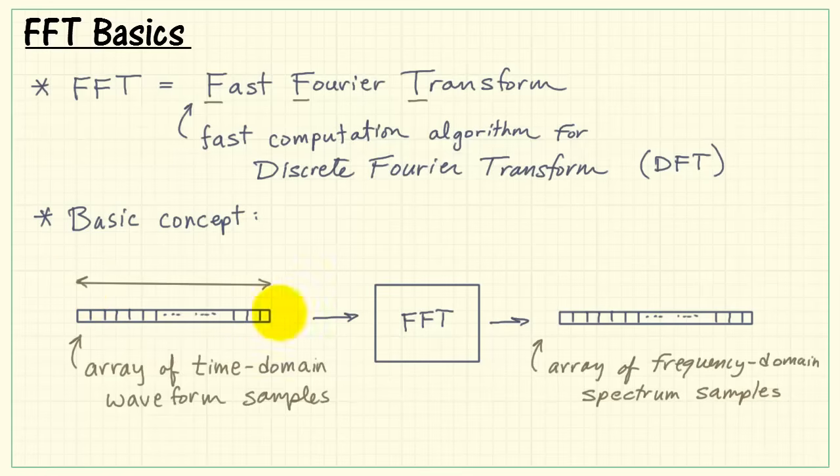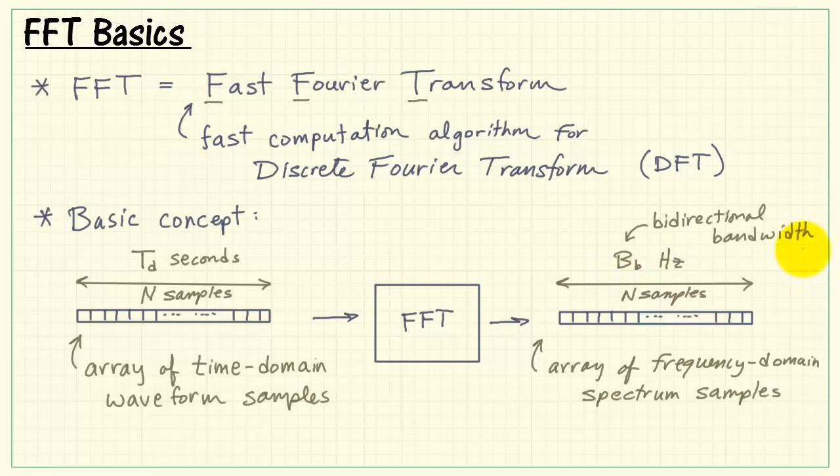As we consider the input array in the time domain, it is of duration t sub d seconds, and it has n samples. The number of samples on the input is exactly the same as the number of samples on the output. We have n samples in the frequency domain also. The span in the frequency domain is b sub lowercase b, and this stands for bidirectional bandwidth.